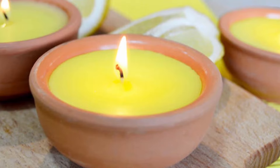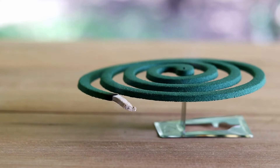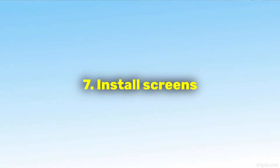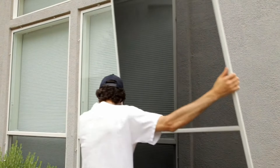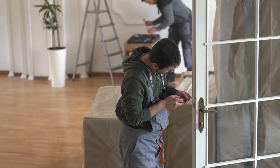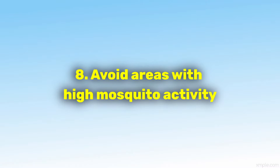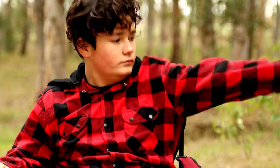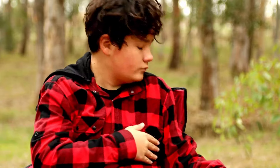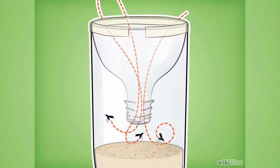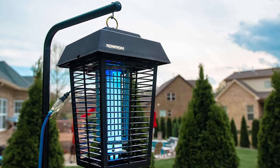Burning citronella candles or using mosquito coils can help repel mosquitoes from outdoor areas. Place them strategically around your outdoor space, especially during gatherings or activities. Install screens on windows and doors to prevent mosquitoes from entering your home, and repair any tears or holes in existing screens. If possible, avoid spending time in areas where mosquitoes are known to be particularly abundant, such as near stagnant water bodies or dense vegetation. Consider using mosquito traps or electric mosquito zappers to reduce mosquito populations around your home.